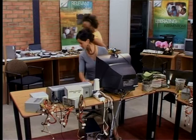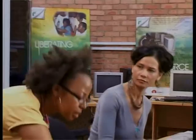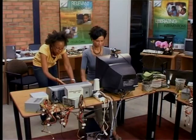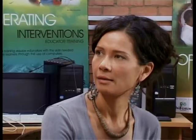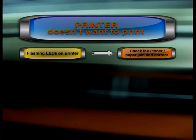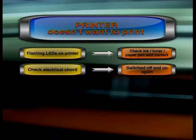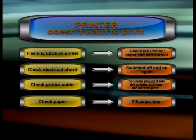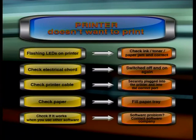I'm having one of those days. There's definitely paper in the paper tray and it's definitely switched on at the mains. It's not showing a paper jam, and it's not flashing that there's no cartridge. Many things can cause your printer not to print. If LEDs are flashing, check the ink, toner, or for a paper jam and correct. Check if the electrical cord is connected properly. Switch the printer off and on. Check the printer cable — is it securely plugged into the correct port? Is there paper in the paper tray? If not, fill it. If the printer prints when you use other software, you might have a software problem. Otherwise, it could be the printer hardware, software, or driver. Check the correct printer is selected. If all fails, replace the printer.